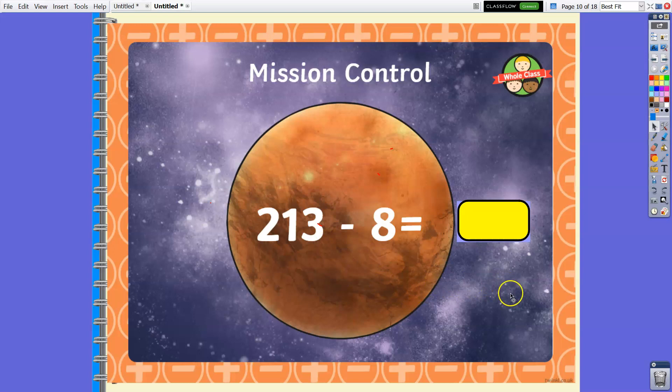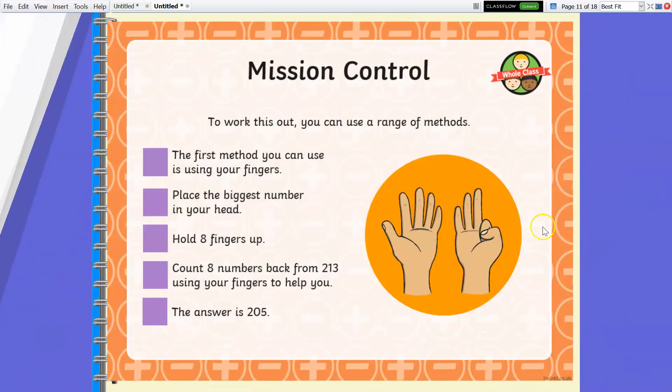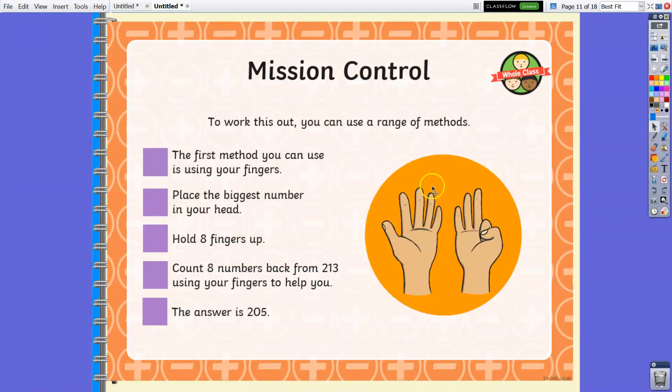Time is up. The answer is 205. Again, you have two different ways to do that. You may use counting backwards using your fingers. Raise your eight fingers up, then hold the big number in your head, 213, then count backwards: 212, 211, 210, 209, 208, 207, 206, 205. So the answer is 205.